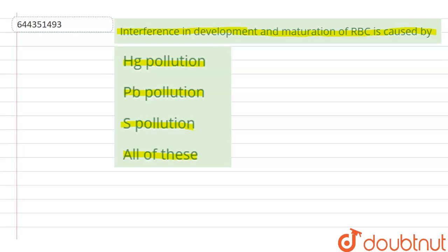The question here is about interference in development and maturation of RBC. RBCs are the red blood cells, so the process of formation of RBCs, that is red blood cells formation, is known as erythropoiesis. In this, the development from erythropoietic stem cells to mature red blood cells is done.